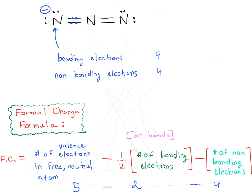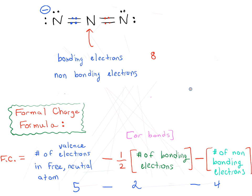Now let's look at the nitrogen in the middle. This time, the number of bonding electrons: it has two bonds to the nitrogen on the right and two bonds on the left, so a total of eight bonding electrons. And non-bonding electrons — does it have any lone pairs? No, it doesn't, so the total is zero.